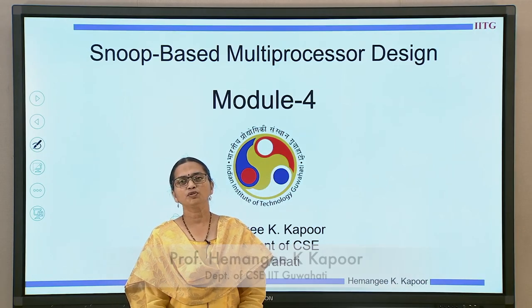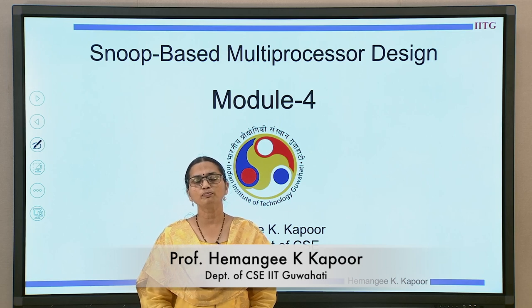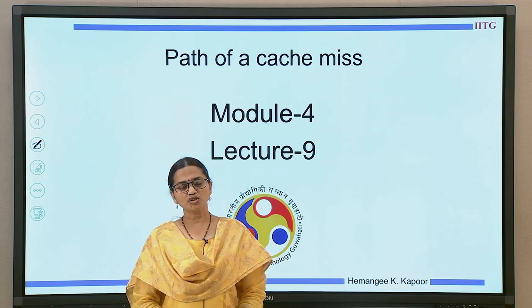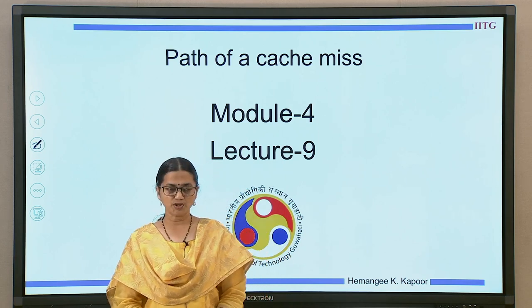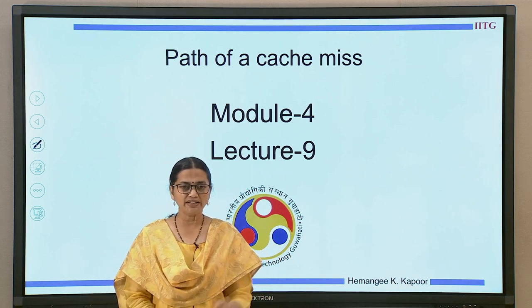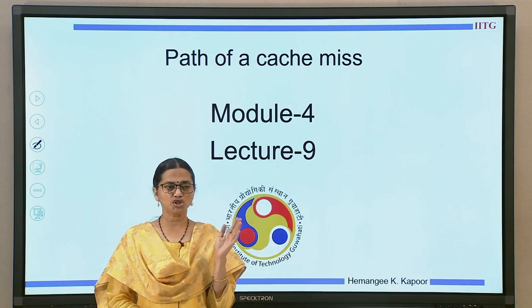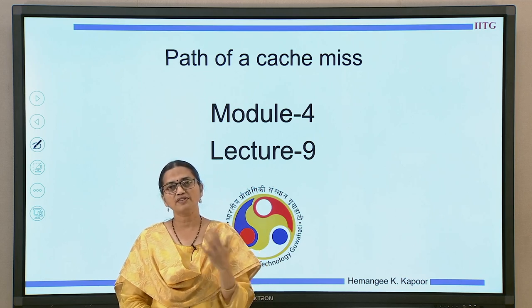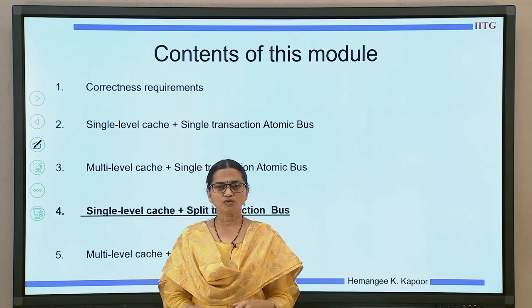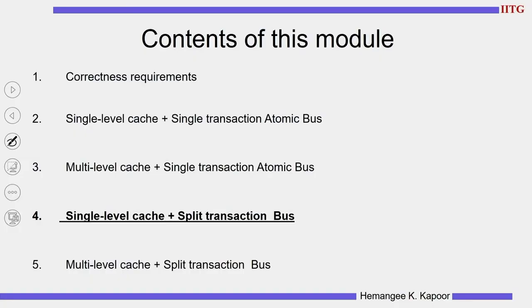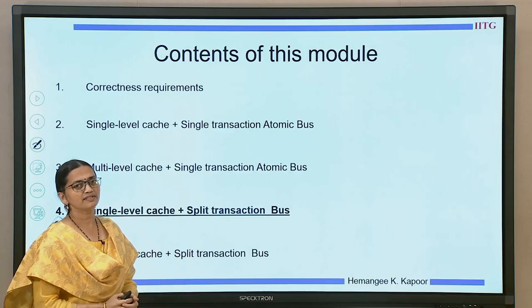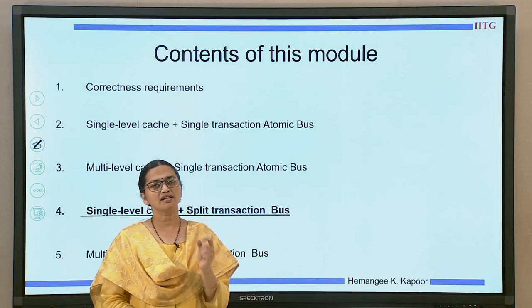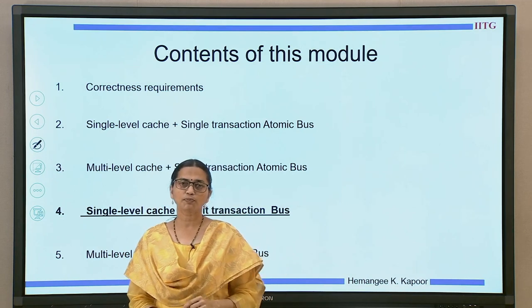Hello everyone. We are doing module number 4 on Snoop-based multiprocessor design. This is lecture number 9 and in this lecture we are going to discuss the path of a cache miss — in detail, we will see all the steps which a particular transaction goes through before the processor finally gets the data block. We are still on point number 4, single level cache with a split transaction bus, and this is the last lecture in this fourth point.